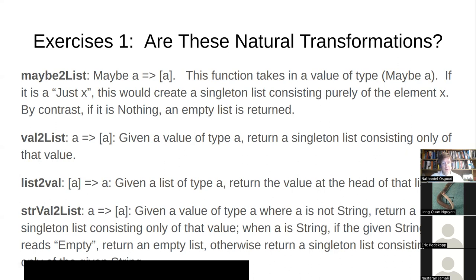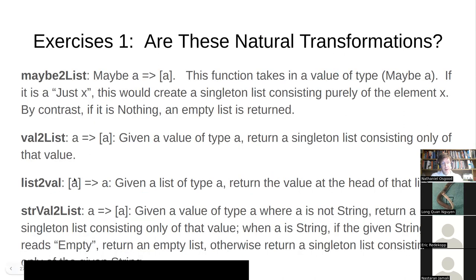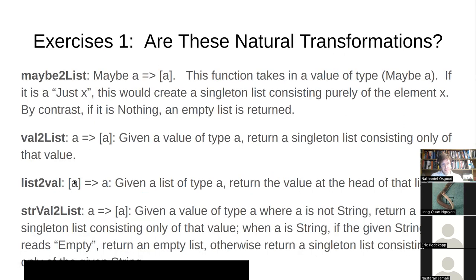Someone asks: how about list_to_val — going from a list back to an identity? In this case, capital F is the list functor: int maps to list of int, bool maps to list of bool. The natural transformation's F-map will be the lifting operation for the list functor.